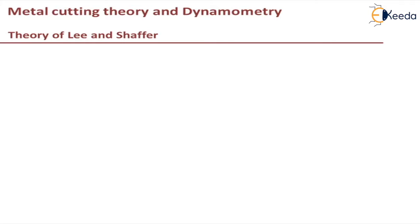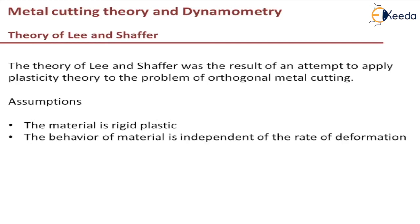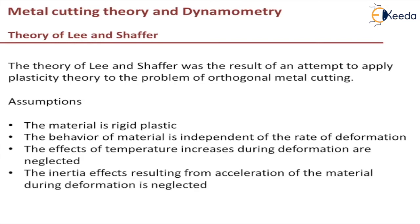The Lee and Schaffer model was the first attempt made to apply the plasticity theory to the problem of orthogonal metal cutting. To do this, they made certain assumptions: they assumed that the material is rigid plastic and the behavior of material is independent of rate of deformation. They neglected the effects of temperature and the inertia effects resulting from acceleration of the material during deformation. These assumptions have led to useful solutions of many problems in plasticity.